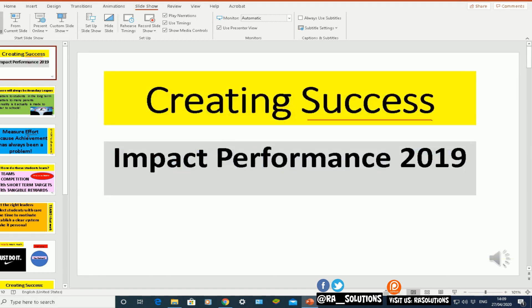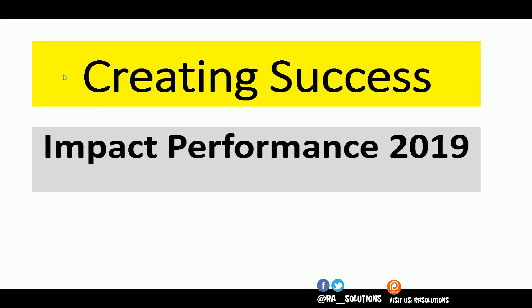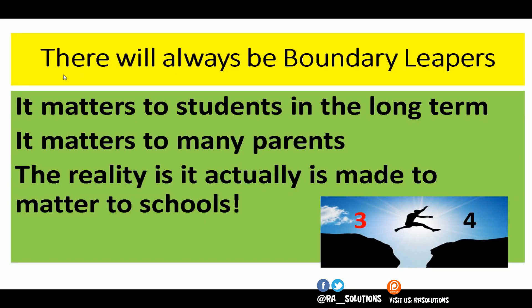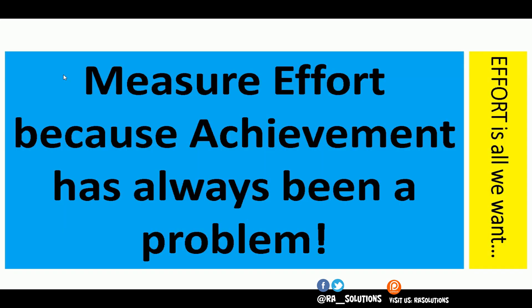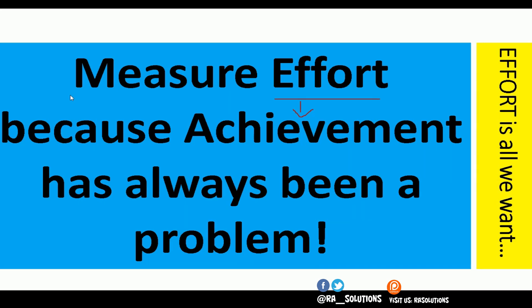Let me go back to slide one and play that in slideshow mode. I'll stay quiet because the narration is going to do this. It's creating success, impact performance 2019. Success is what we all want. Moving on. In terms of students, there are always going to be those pupils who are going to be boundary leapers — those on the cusp of grade three or grade four, those on the cusp of grade four and grade five. That's important not only for the students; it's important for parents and the schools as well. What do we need to do to move these pupils on from grade three to four and four to five? Moving on. Effort is directly linked to the achievement students make — you don't make any effort, more than likely you're not going to achieve or get the grade. I'm going to stop there and click on escape.